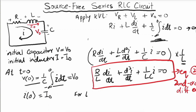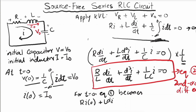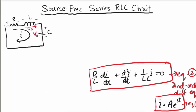For initial values, when time equals zero, equation one becomes R·i(0) + L·di(0)/dt + V₀ = 0, which we rearrange accordingly. The solution will be an exponential function in the form i = A·e^(st), which we call equation three. After substituting equation three into equation two and simplifying, we get (s + R/L)(s + 1/LC) = 0.